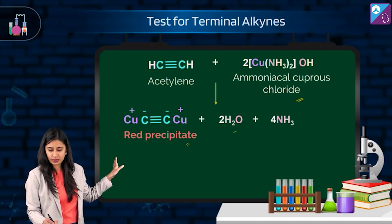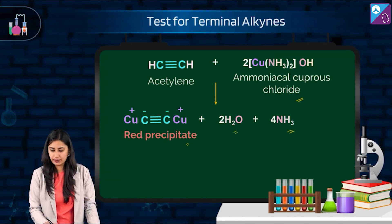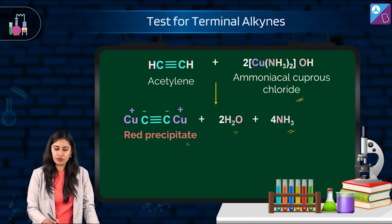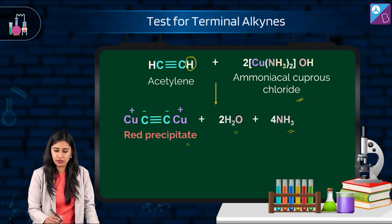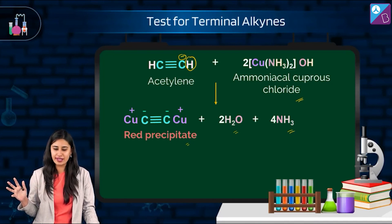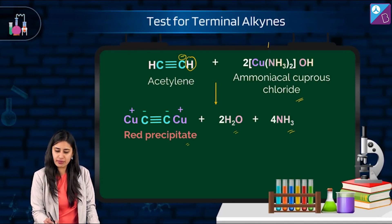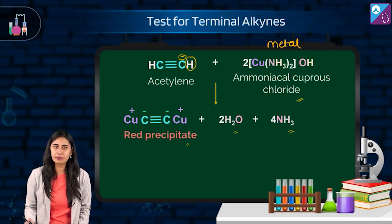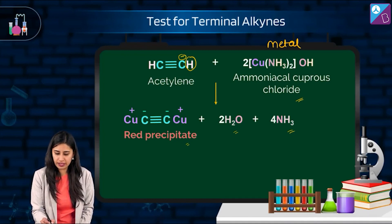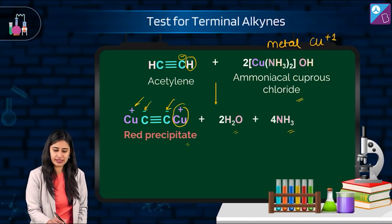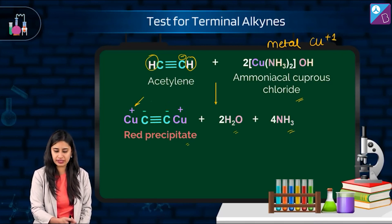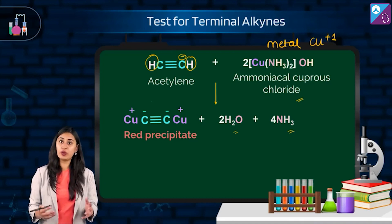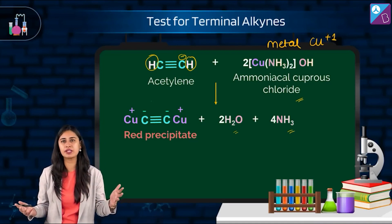From acetylene reacting with ammoniacal cuprous chloride, we get a red precipitate along with two moles of water and ammonia. Why does this happen? The acidic hydrogen is lost as H⁺, leaving a carbanion. Reactive metals immediately bond in place of the acidic hydrogen — copper is in the +1 state here. The result is a red-colored precipitate, which is observable with the naked eye, making it a useful detection test.